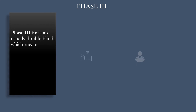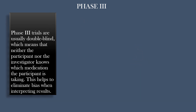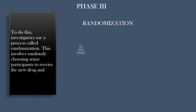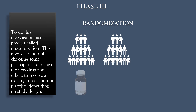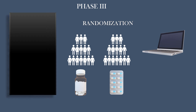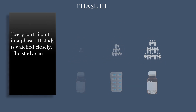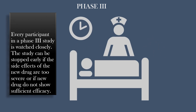Phase 3 trials are usually double-blind, which means that neither the participant nor the investigator knows which medication the participant is taking. This helps to eliminate bias when interpreting results. To do this, investigators use a process called randomization, which involves randomly choosing some participants to receive the new drug and others to receive an existing medication or placebo, depending on study design. A computer program is often used to randomly assign people to the trial arms. There can be more than two treatment groups in Phase 3 trials: the control group gets the standard of care treatment, and the other groups get a new treatment. Every participant is watched closely, and the study can be stopped early if side effects are too severe or if the new drug doesn't show sufficient efficacy.